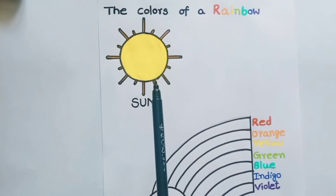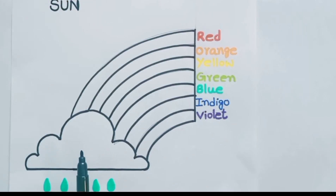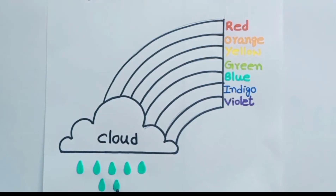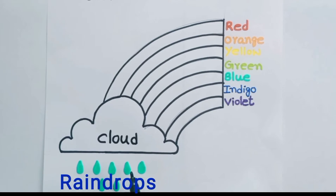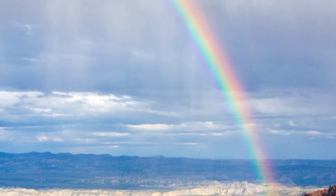Do you know how does the rainbow form? Here is the Sun present in the sky. Then, what is this picture? Yes, it is a cloud. What are these? Yes, these are water drops — these are raindrops. The raindrops are present in the cloud. When the sunlight passes through these raindrops, the light will bend and form a rainbow.